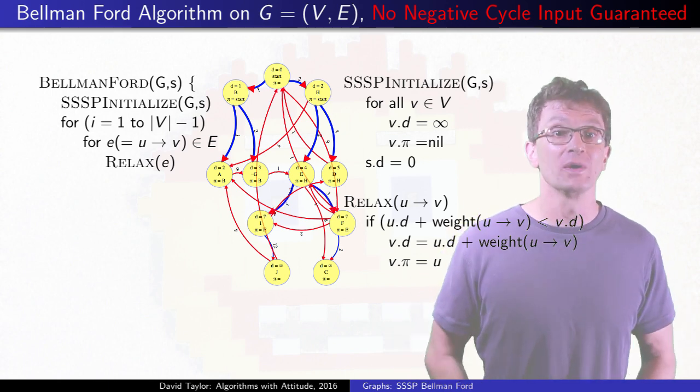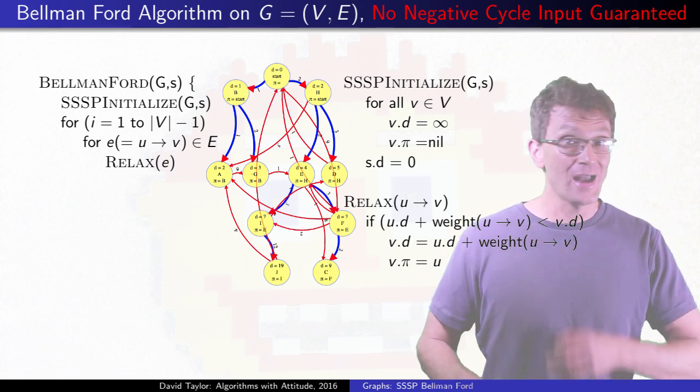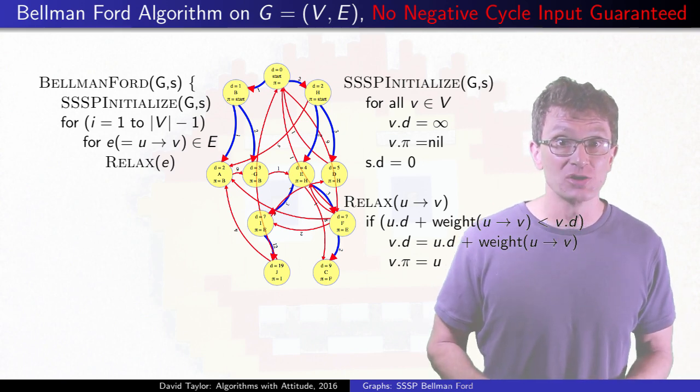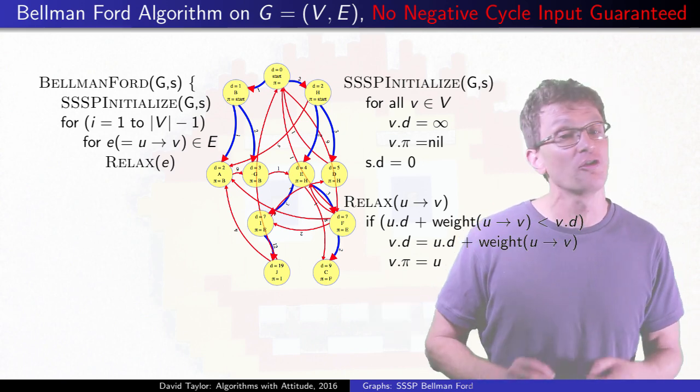So after that many rounds, we hit every level. Extra relaxations happen, but as long as we have a critical edge ordering somewhere in the list, we're fine.